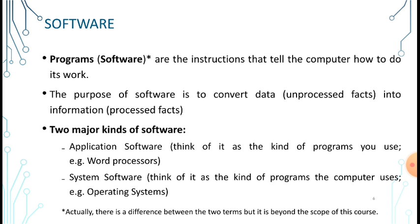The third part of the information system is software, also called programs. These are instructions that tell the computer how to do its work. The purpose of software is to convert data into information. Data is unprocessed fact; after processing, data becomes processed fact, which is information.